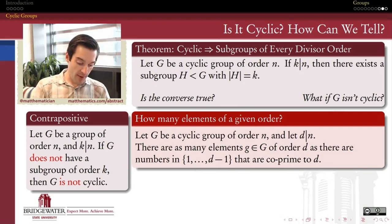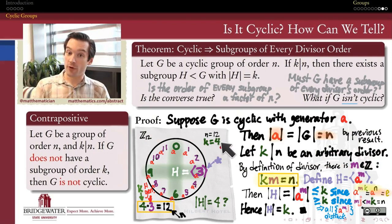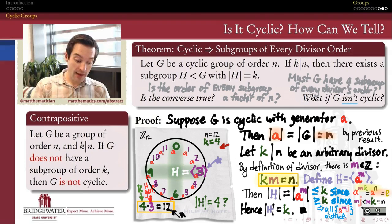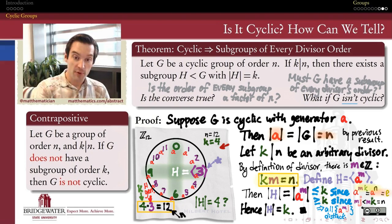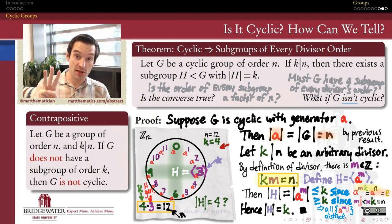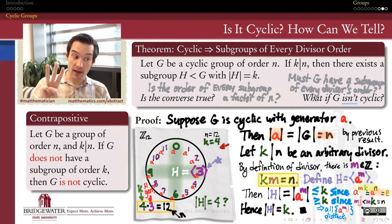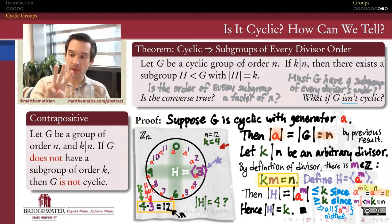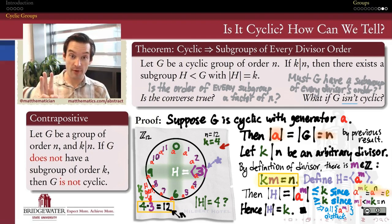Looking back at the last slide, I wanted a group of order 4, so I was looking for an element of order 4. The question of how many elements of order 4 there are is answered by how many of the numbers between 1, 2, and 3 are co-prime to 4. The common factor between 1 and 4 is 1, so 1 is co-prime to 4 — that's one example. The number 2 is not co-prime to 4; 2 and 4 share a common factor, namely 2, so we remove 2 from the list.